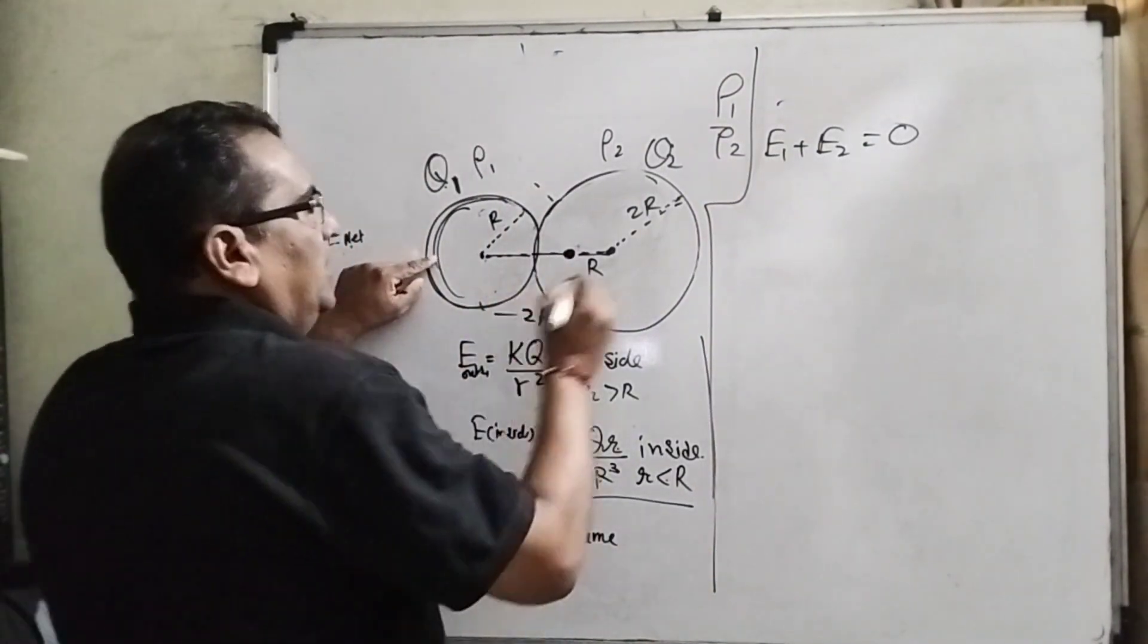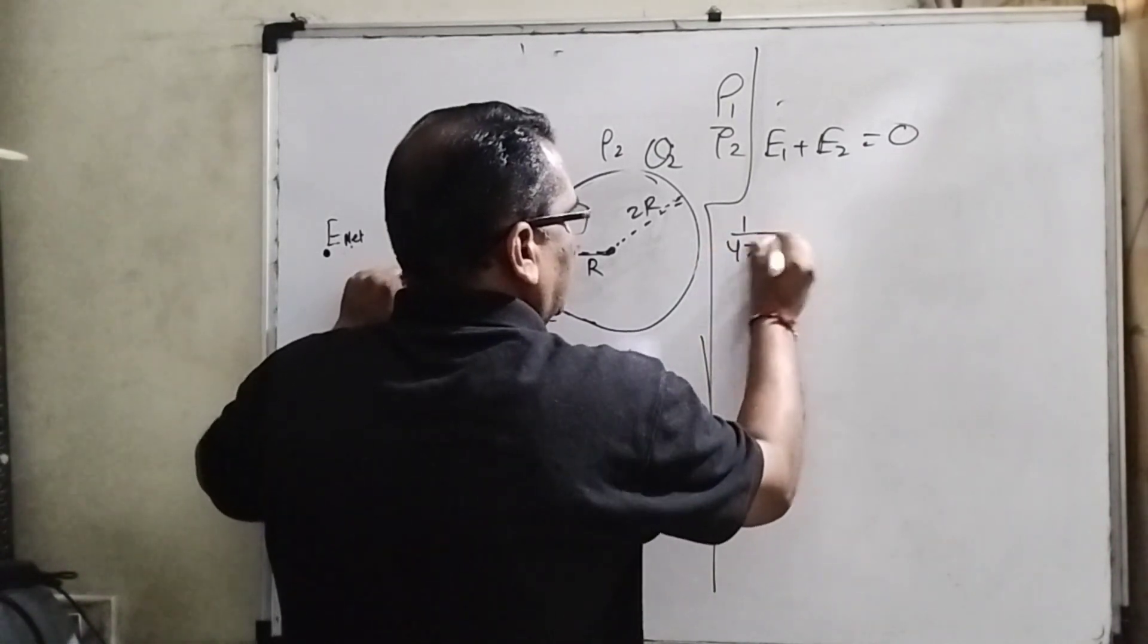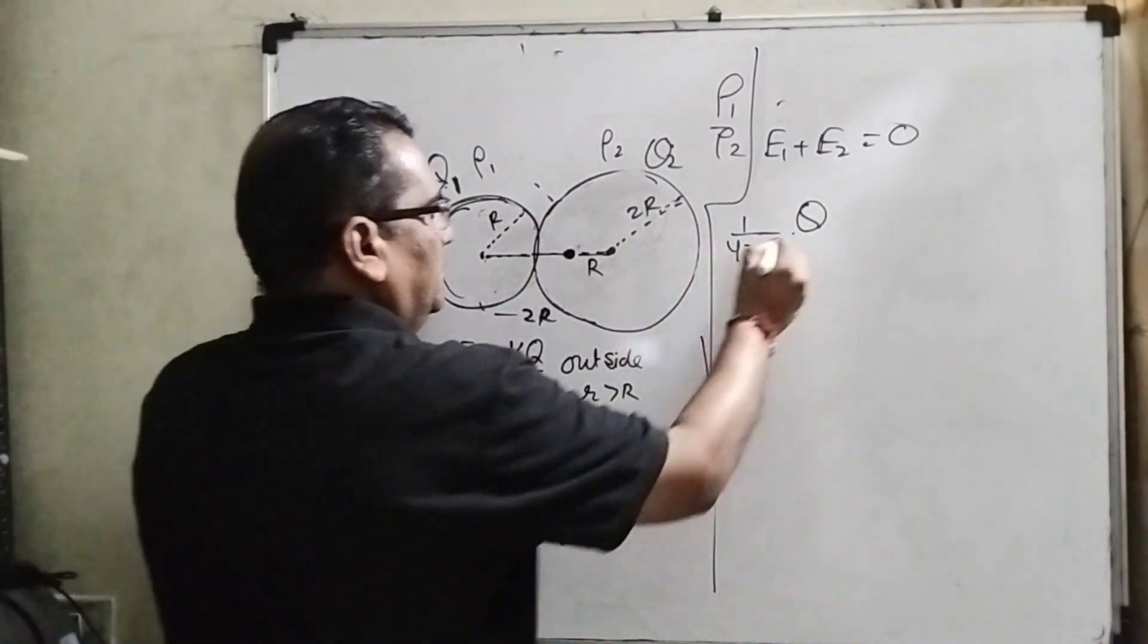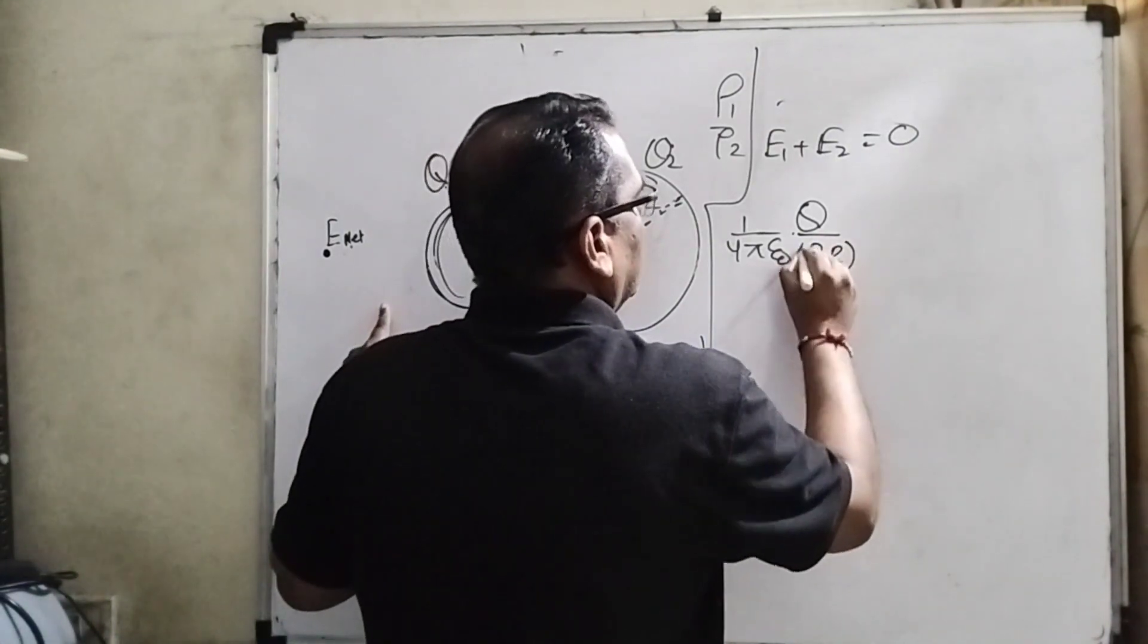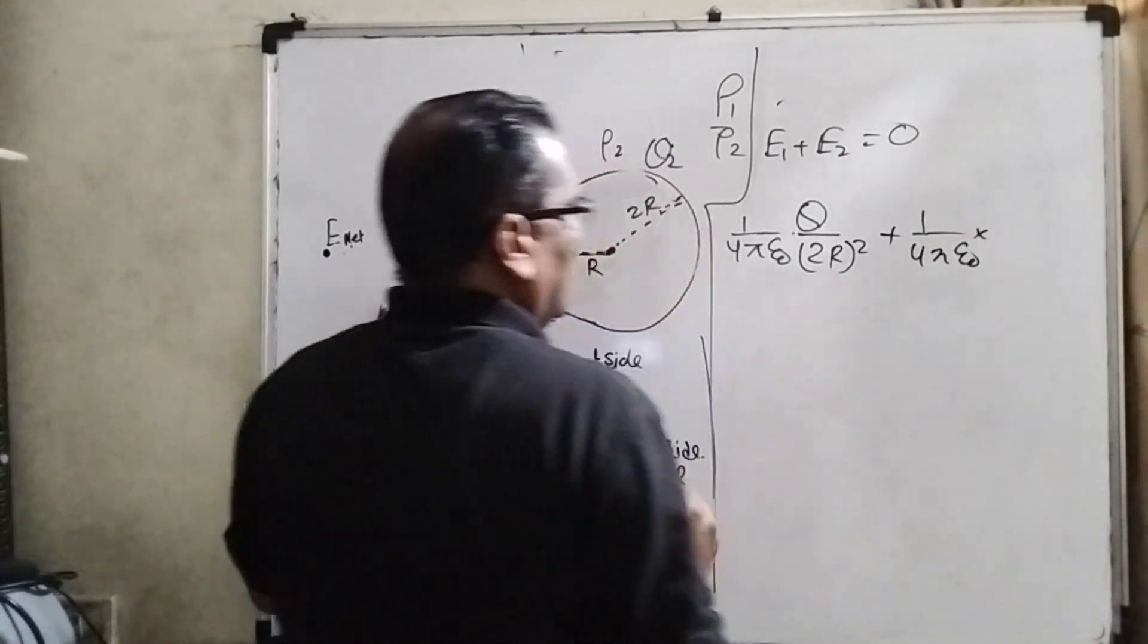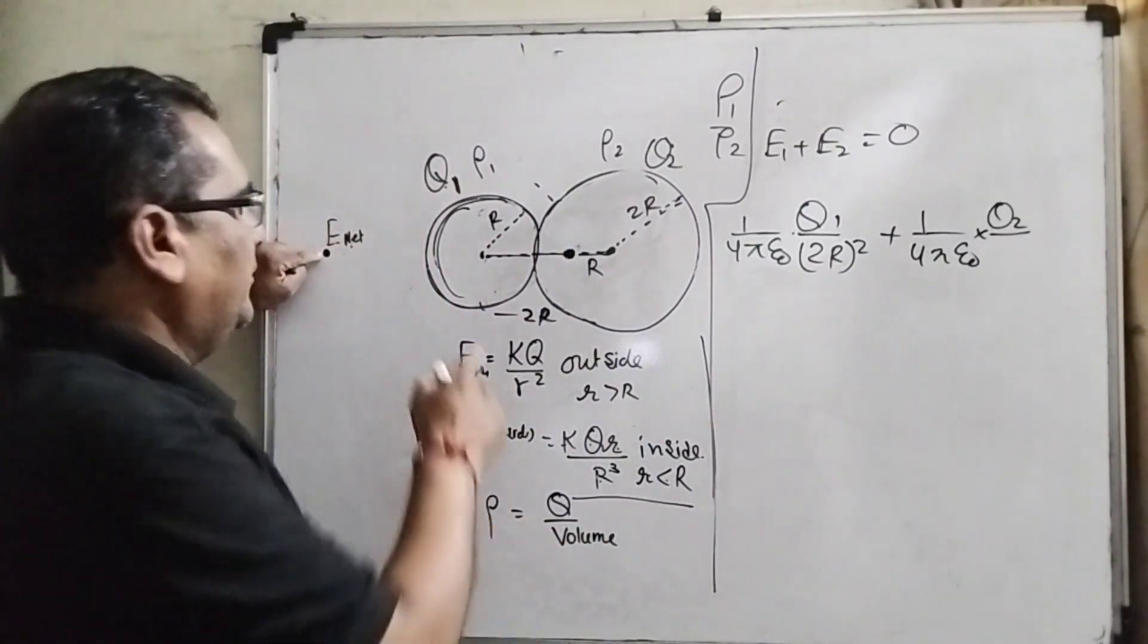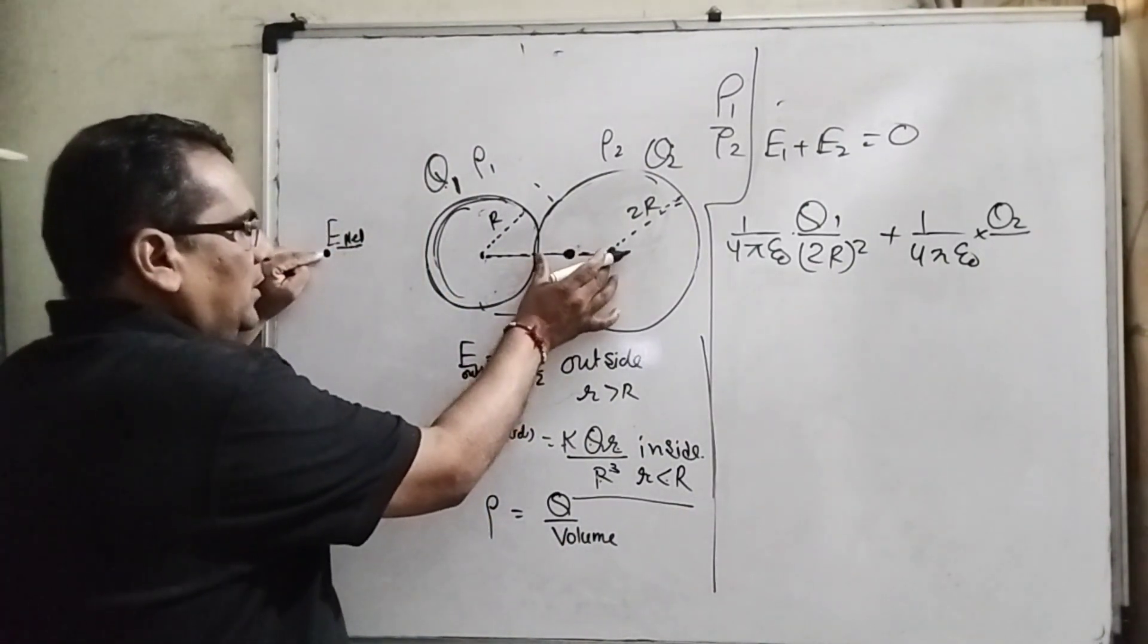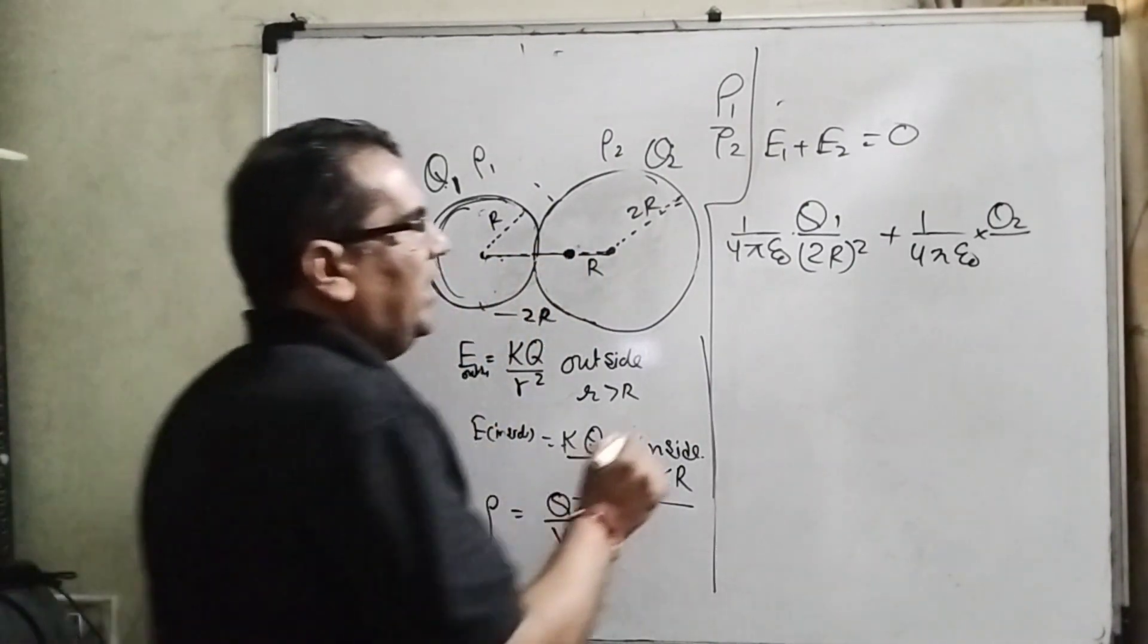Then for E1 is 1 upon 4 pi epsilon 0 q1 over distance 2r square. Plus 1 upon 4 pi epsilon 0 q2, and what is the distance?